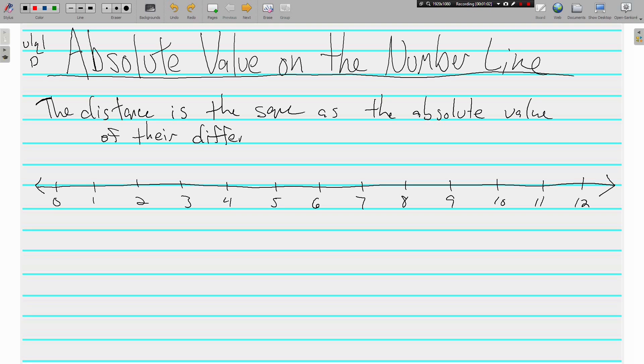Last time when we introduced absolute value, we talked about how the absolute value of a number is a number's distance from zero. Today we're going to talk about the distance between two numbers on a number line and how it is the same thing as the absolute value of their difference. Remember, difference means to subtract.